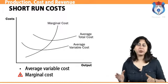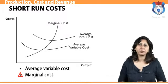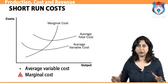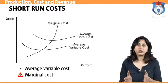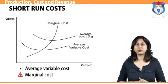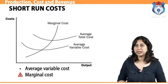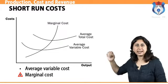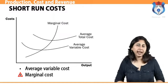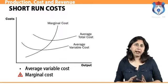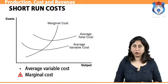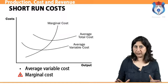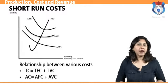Marginal cost is the addition to the total cost by producing one more unit of output. It is the difference between the previous total cost and the present total cost — the addition to the total cost of producing n units of output instead of n minus 1 units, expressed as MC = TC(n) − TC(n−1). Marginal cost changes due to the change in variable costs and therefore has no relation with the fixed cost, which is given and constant.